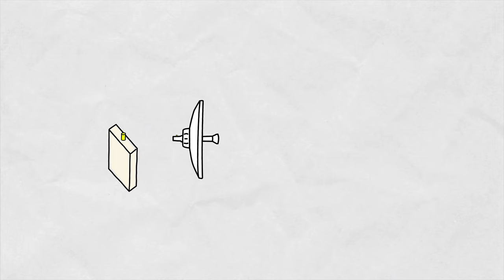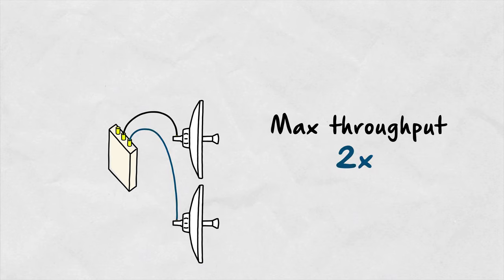The number of spatial streams tells us how many physically separated channels we use for data transfer. Naturally, the maximum throughput increases with every additional channel, but it's also hardware intensive. Every new channel takes another antenna and radio.